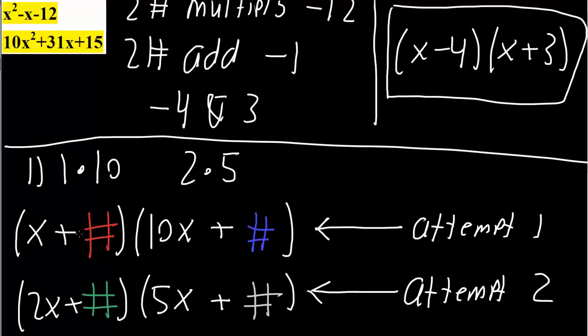And just setting it up, we would get x plus a number times 10x plus a number. This would be this attempt. The other attempt would be 2x plus a number times 5x plus a number, the second attempt. And so what we want to do is also to get 15. 15, there's no real changes. It can either be 1 times 15 or 3 times 5.